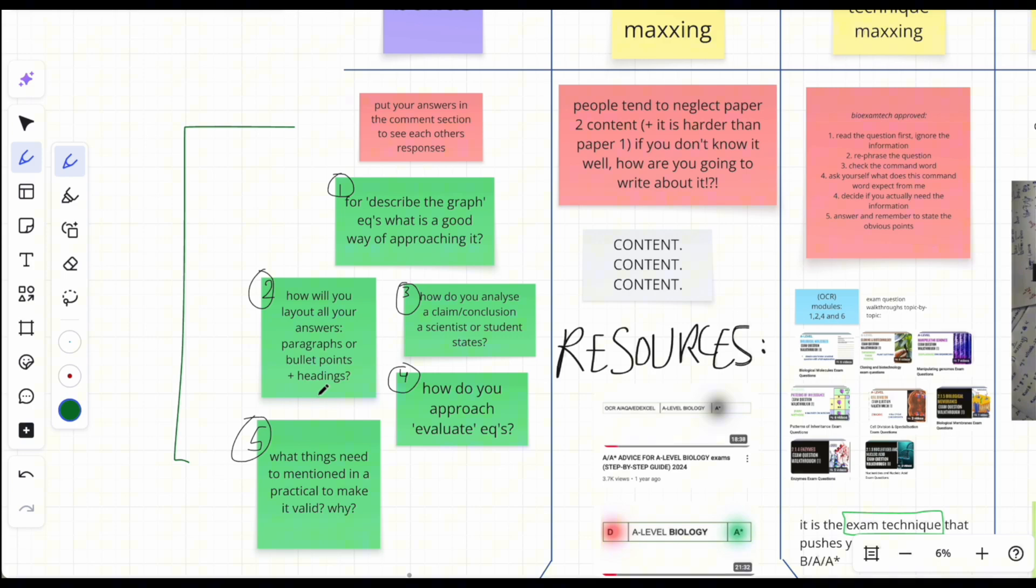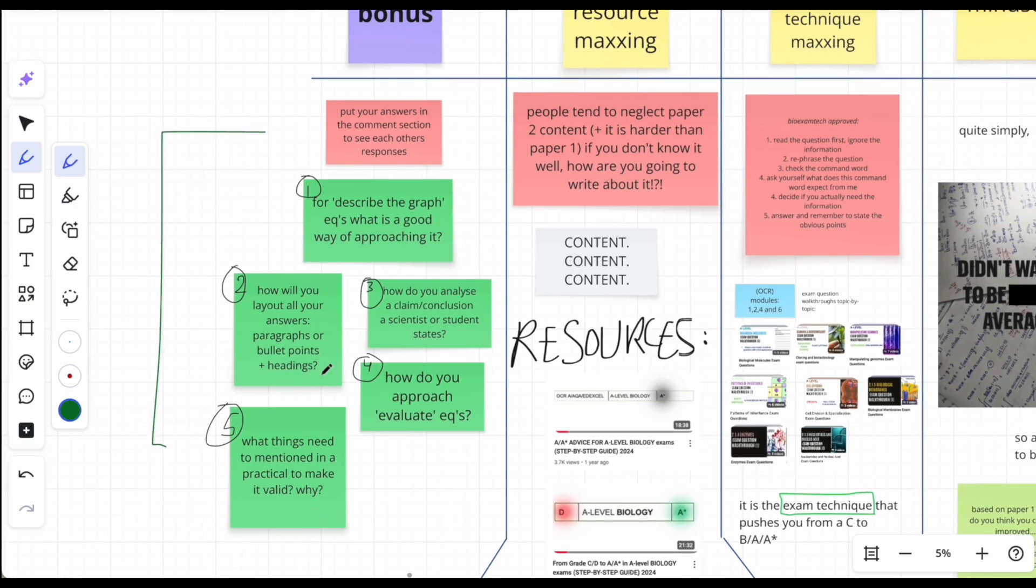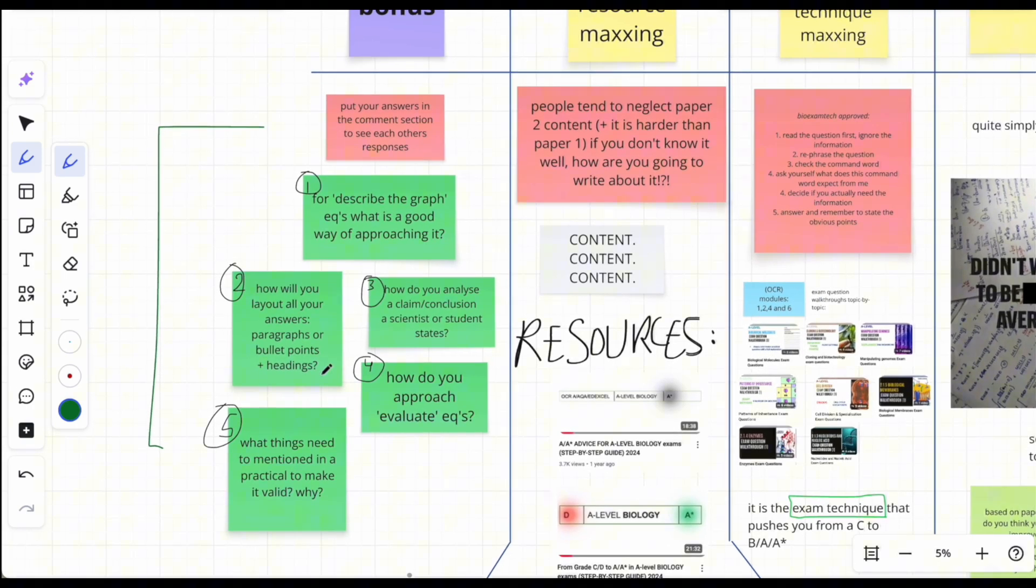At the end of the day, the examiners are just people who just want to make extra money in summer. Please make it easy for them, they're tired, they just want to put food on the table. So maybe that should give you a bit of a hint about that question. Next one, how do you analyze a claim or conclusion a scientist or a student states? And how do you approach evaluate questions? Do you have a methodology?